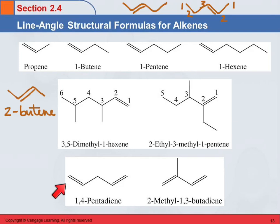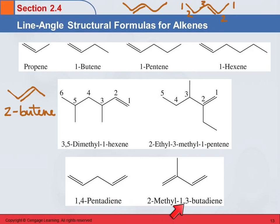Down here we have an example of dienes. So this is 1,4-pentadiene — there's a double bond on carbon-1 and a double bond on carbon-4. You could have 1,3 also. This is 2-methyl-1,3-butadiene. So here we have 4 carbons with double bonds starting at 1 and 3. We're numbering from the left because we want this methyl group to be on carbon-2. If we numbered the other way, it would end up on carbon-3, and that wouldn't be as good. Any questions about those?